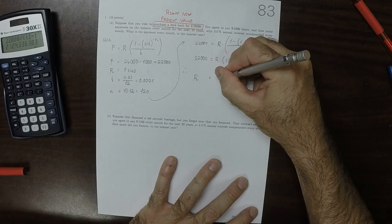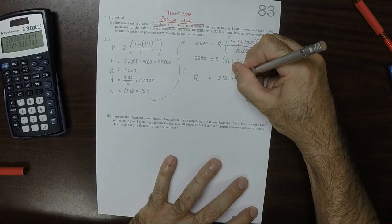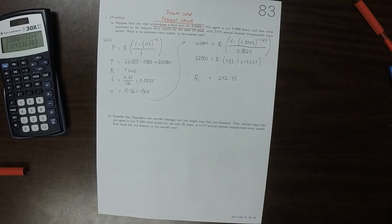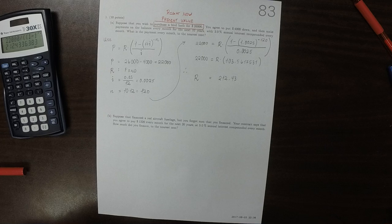So, R is 212.43 to the nearest cent. So, that means for this birdbath, you'd have to agree to pay $212.43 every month.